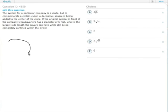So the symbol for a particular company is a circle. We'll pretend that thing I drew is really a circle. And to commemorate the event, the square is being added to the center of the circle.